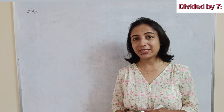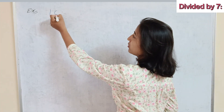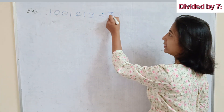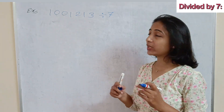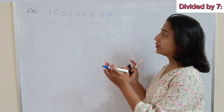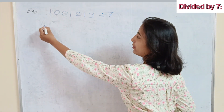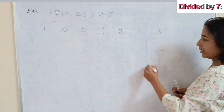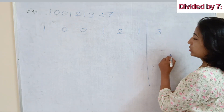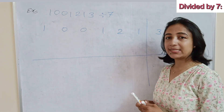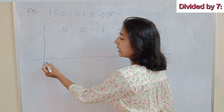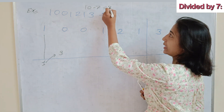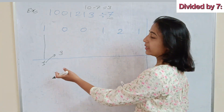Now let's see one more example for a clear understanding of this method. Suppose we are given the question 1001213 — any number can be taken. We want to divide this 7-digit number by 7. Obviously 7 is 3 less than 10, so every addition we take 3 times. We write the number with a single digit on the right side and the remaining digits on the left: 100121 | 3. The first number, 1, is written as it is.